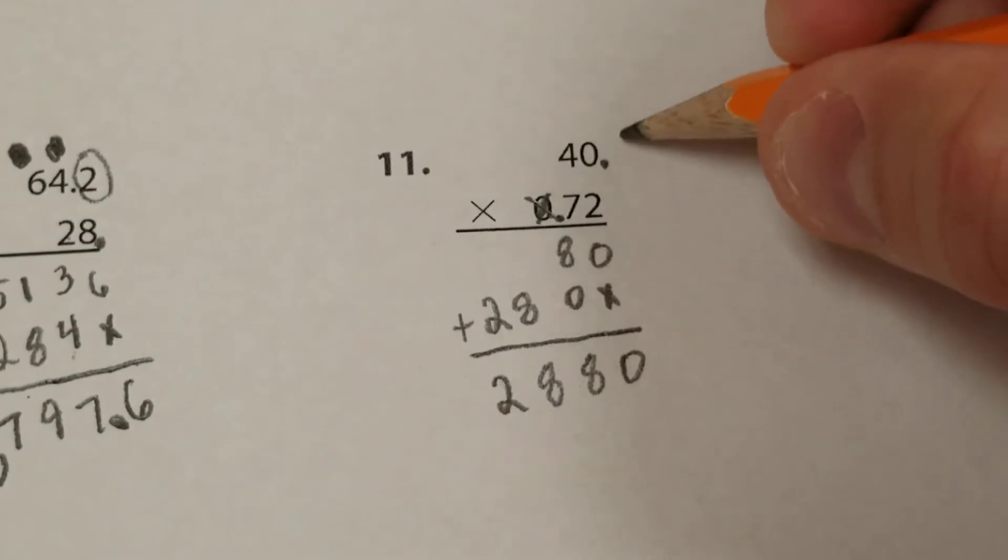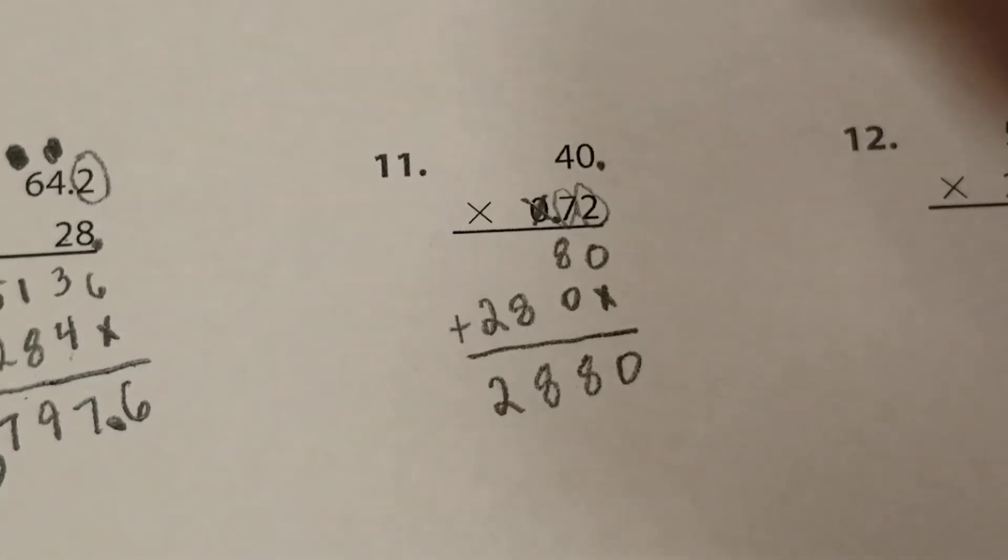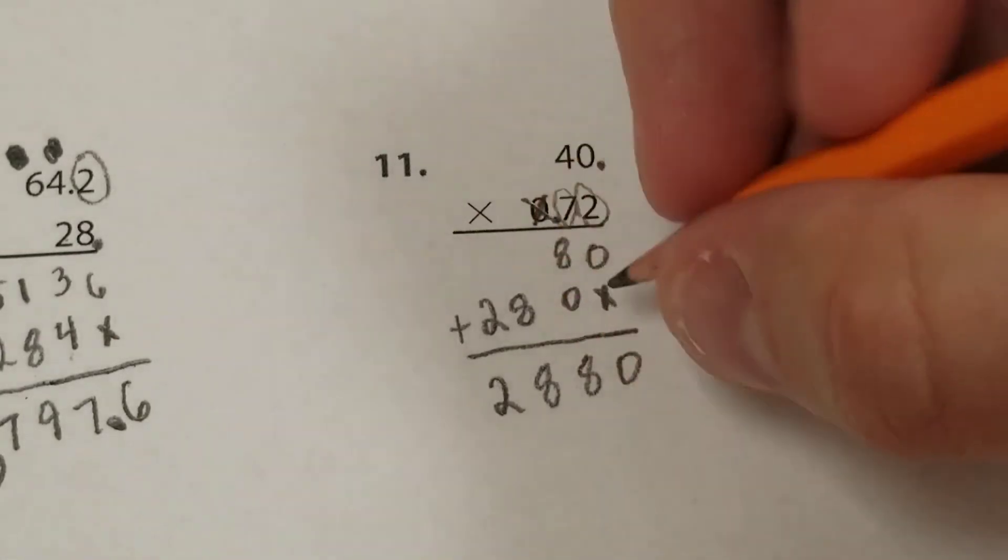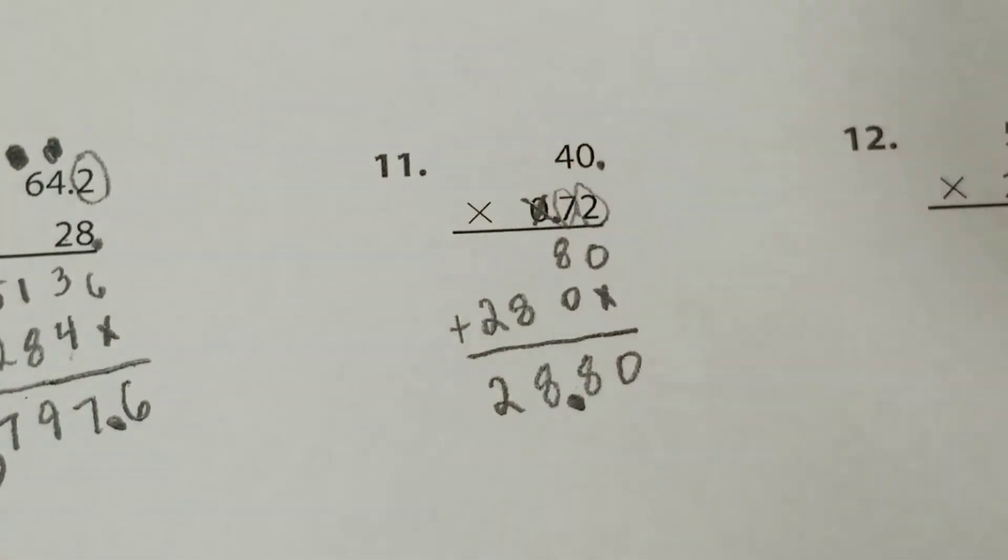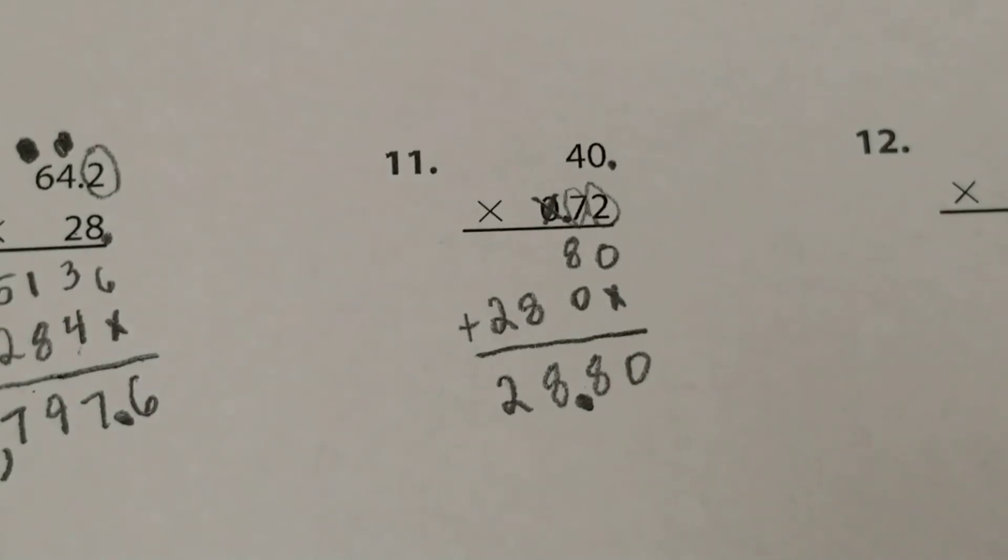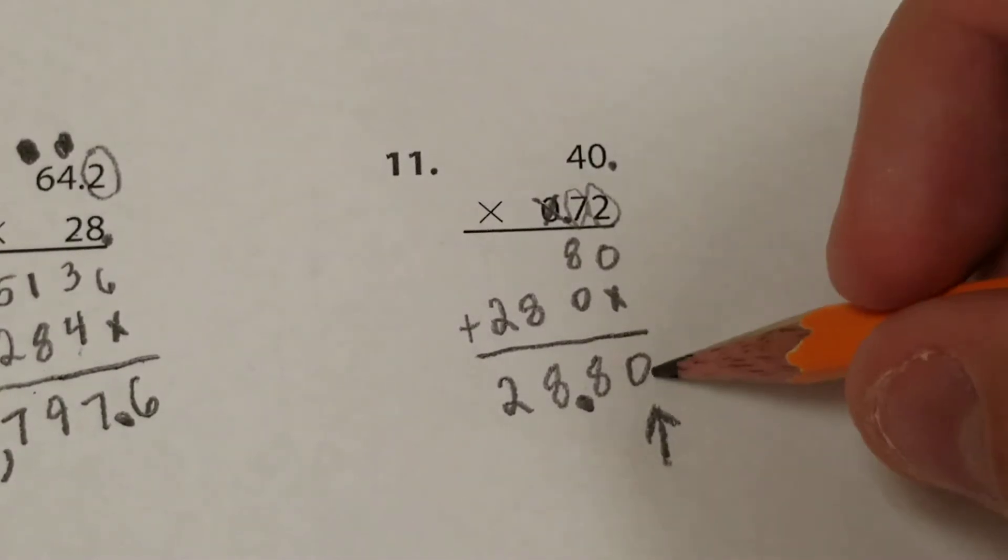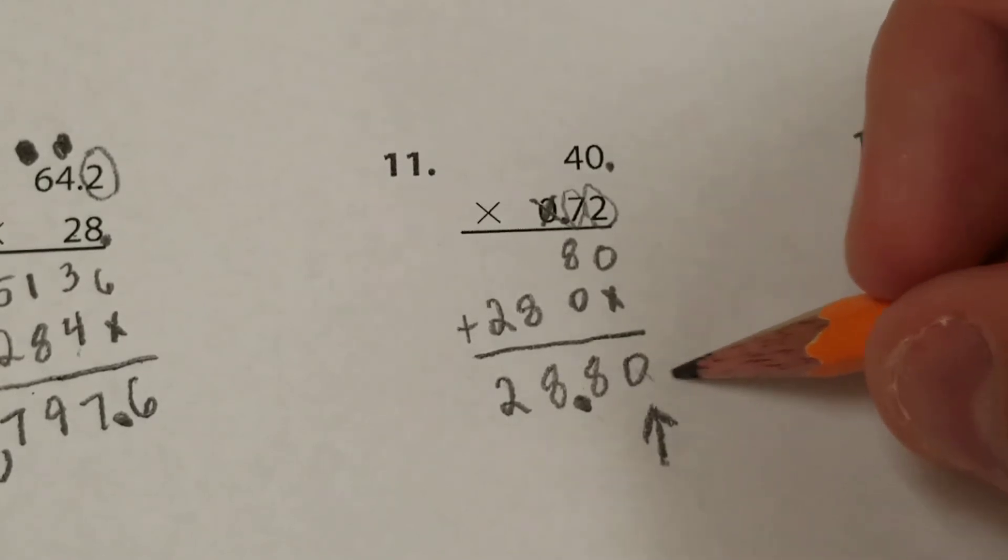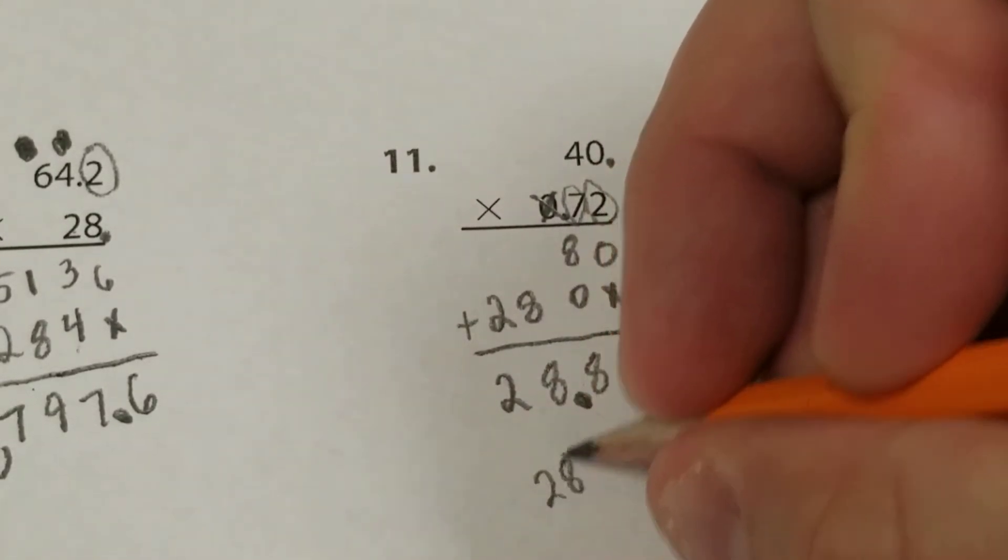Now we count our decimal spots. The 40 is here, there's nothing after it. 0.72 we actually have two spots after the decimal. So I go to the end and I just move it over 1, 2. So 1, 2, it's going to be between the 8 and the 8. At the end here, we have a 0. At this point, now that we've moved the decimal, we can get rid of that 0. We don't need 0s at the end of the number after the decimal. So really, our answer is just 28.8.